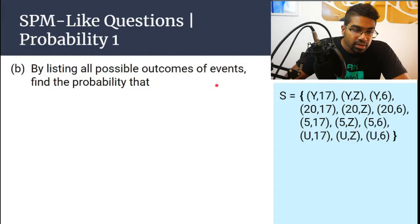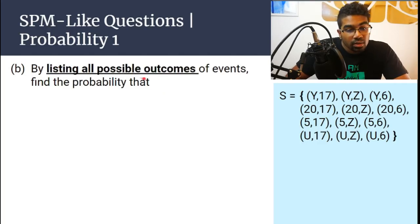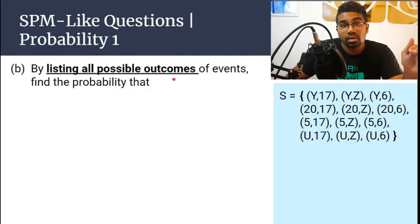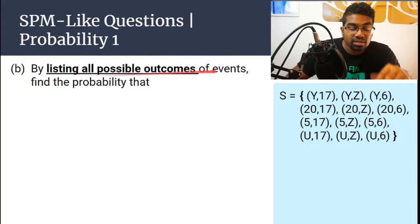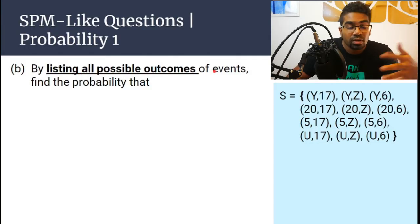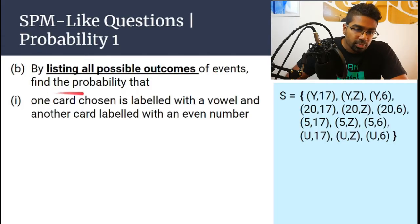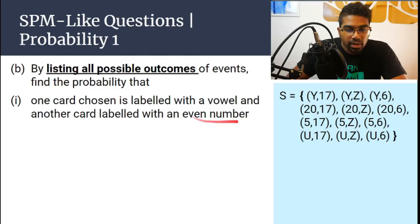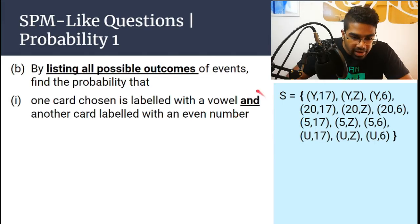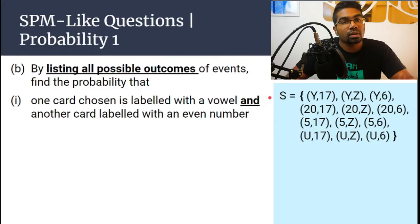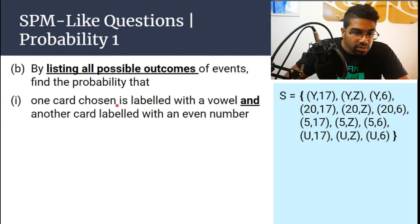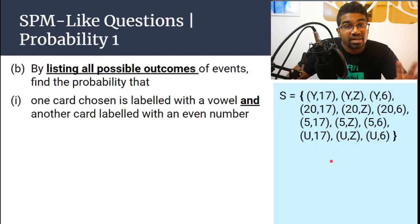Then, by listing all possible outcomes, find the probability. The second part of the question always starts like this — by listing out all possible outcomes. A lot of times students will miss this step, so don't waste your marks. Always be sure to list all the possible outcomes of the events they are asking for. The first example is: find the probability that one card chosen is labelled with a vowel AND another card labelled with an even number.